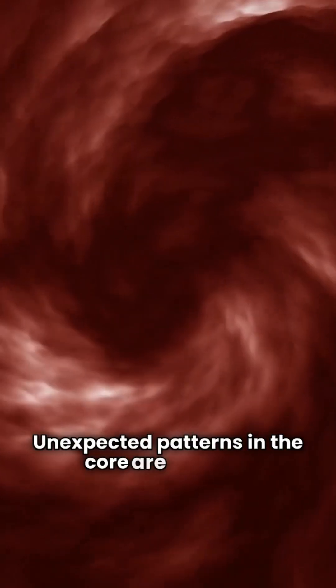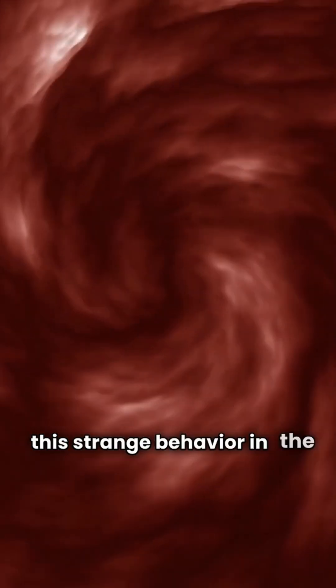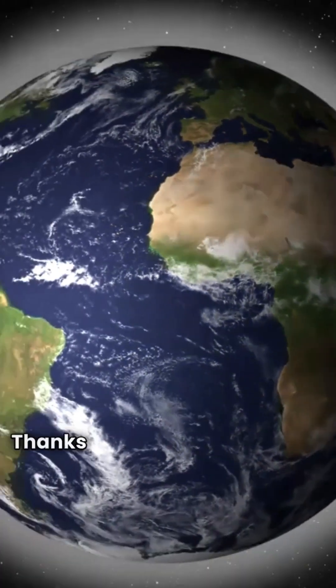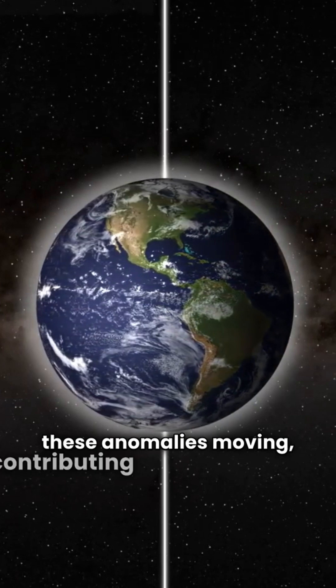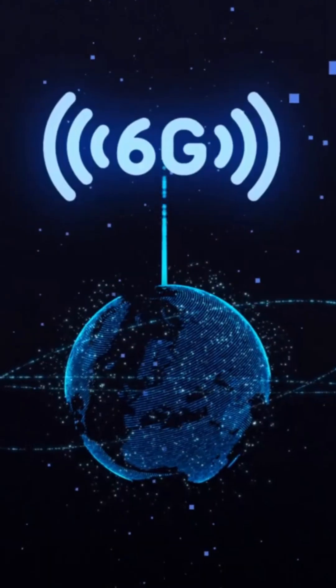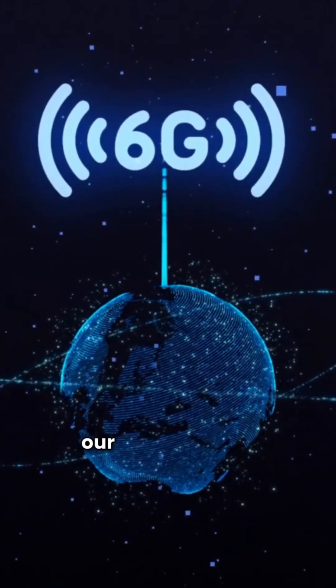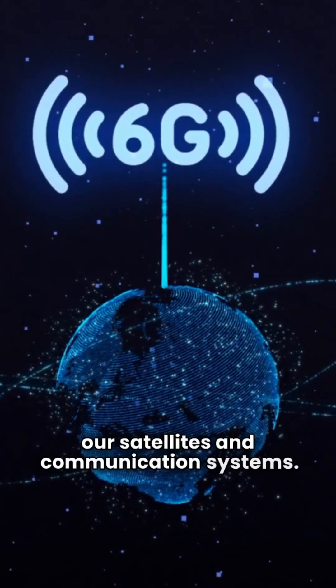Unexpected patterns in the core are causing this strange behavior in the magnetic field. Thanks to Swarm data, we can see these anomalies moving, contributing to the weakening. This is a critical moment for our satellites and communication systems.